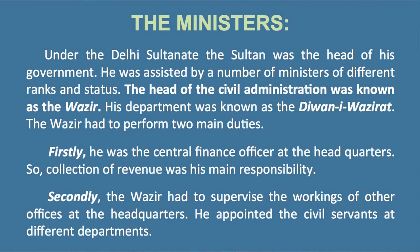Under the Delhi Sultanate, the Sultan was assisted by a number of ministers of different ranks and status. The head of the civil administration was known as the Wazir, and his department was known as the Diwan-e-Wazir. The Wazir had two main duties: firstly, he was the central finance officer at the headquarters, so collection of revenue was his main duty. Secondly, the Wazir had to supervise the workings of other officers at headquarters and appointed civil servants to different departments.